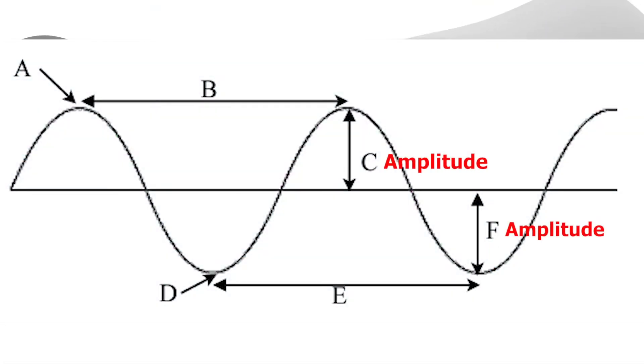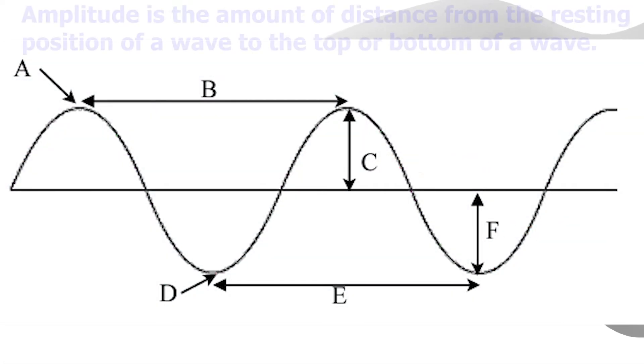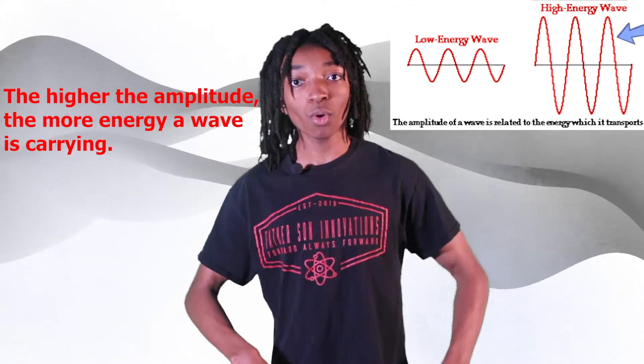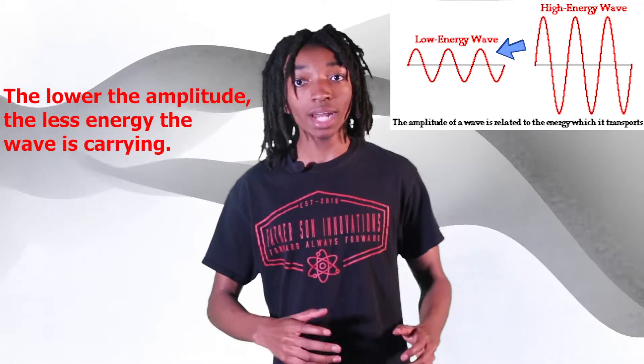Amplitude is represented by C and F on this diagram. Amplitude is the amount of distance from the resting position of a wave to the top or bottom of a wave. The higher the amplitude, the more energy a wave is carrying. The lower the amplitude, the less energy a wave is carrying.